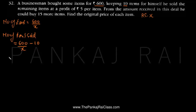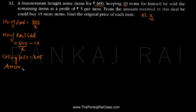He is selling these items at a profit of 5 rupees, so the selling price will be equal to the original price X plus 5. He is selling (600/X - 10) number of items at a price of (X + 5) rupees each. So the total amount he receives from the deal is (600/X - 10) multiplied by (X + 5).